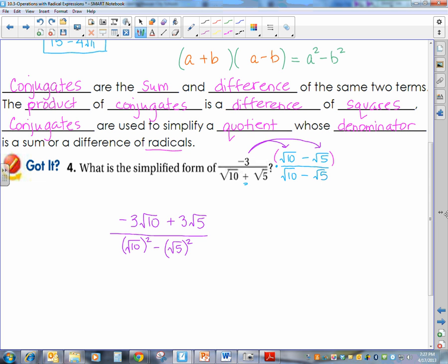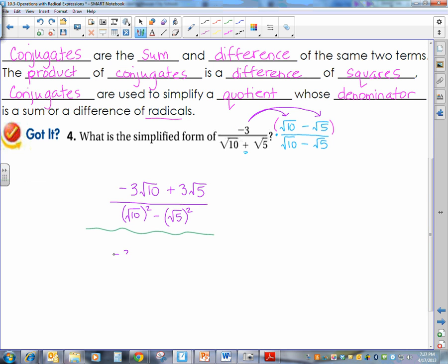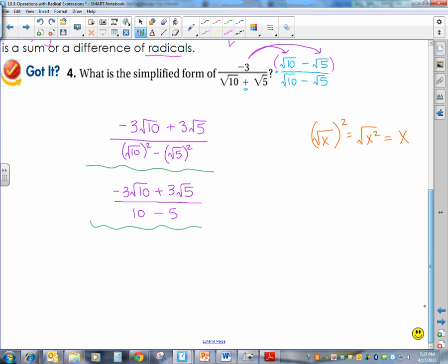Well, it's always going to be like that. So that means the next step will be negative three square roots of ten plus three square roots of five. There's that concept we keep running into. What is the square root of x squared? It's the same as the square root of x squared, which is x. So, the square root of ten squared is ten, minus the square root of five squared is five. And when we simplify, our top can't be simplified any further, but our bottom, negative three square roots of ten plus three square roots of five, all over five. And we have finished talking about operations with radical expressions.